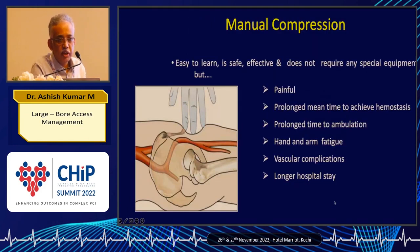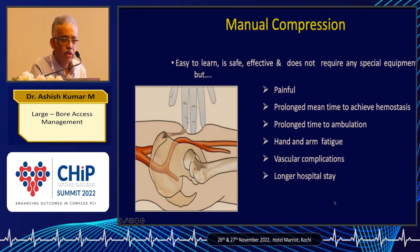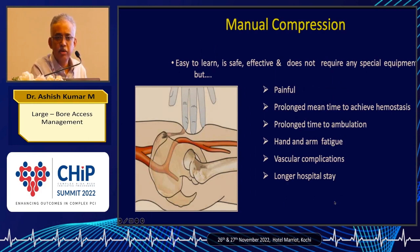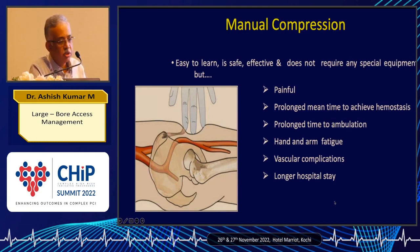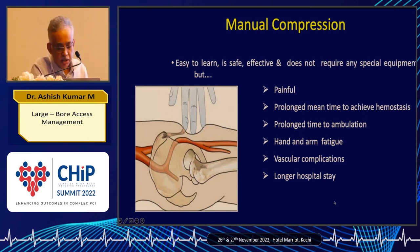Traditionally, vascular accesses were managed by manual compression. It is reasonable to say that up to 12 French on the arterial side and up to 14 French on the venous side can be managed with manual compression. But generally it is painful, requires much longer to achieve hemostasis, causes prolonged immobilization, and fatigues the healthcare worker. With larger vascular access, manual compression is not feasible.